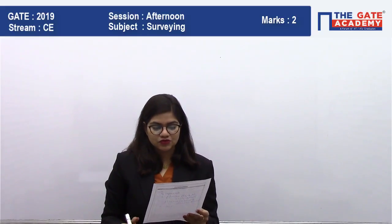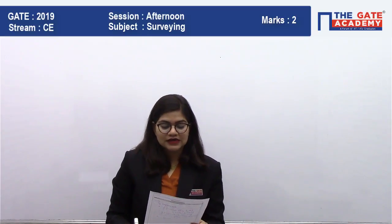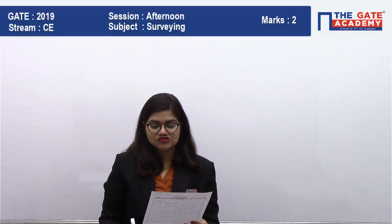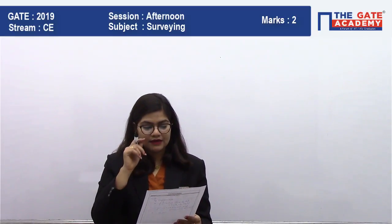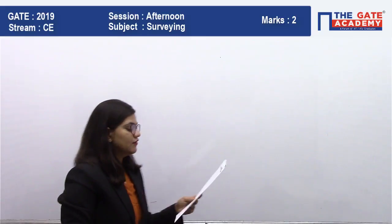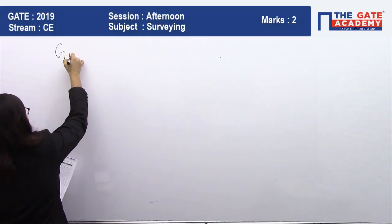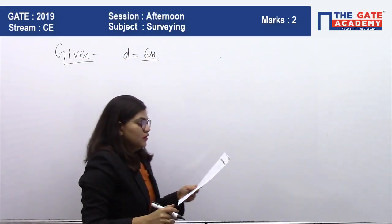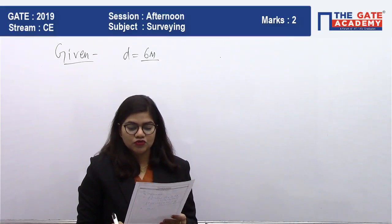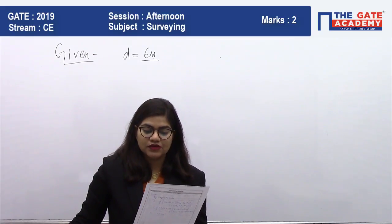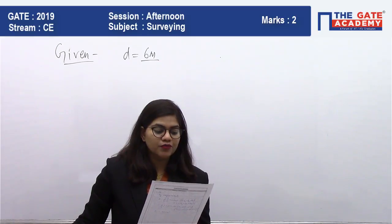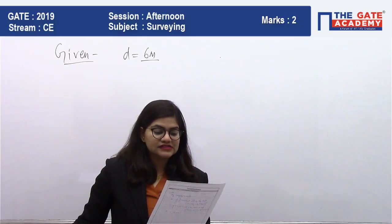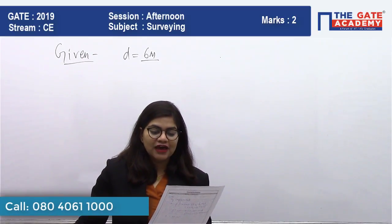This question is asked from Simpson's rule. The question is: a series of perpendicular offsets taken from a curved boundary to a straight survey line at an interval of 6 meters. The offset values given are 1.22, 1.67, 2.04, 2.34, 2.14, 1.87, and 1.15 meters.